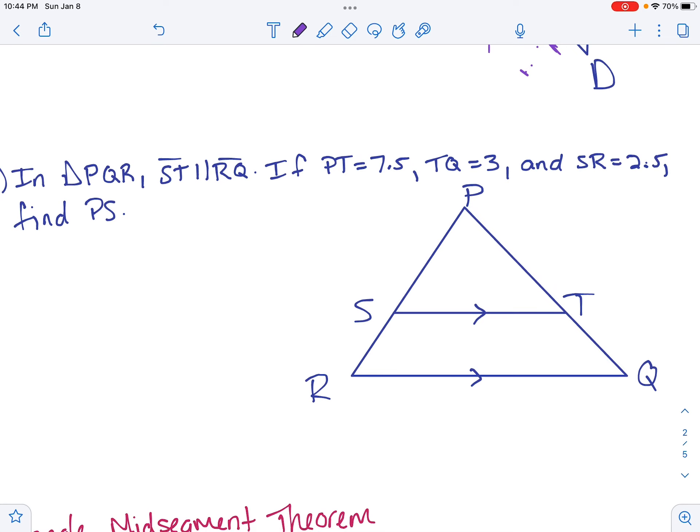In triangle PQR, ST is parallel to RQ, so we have that marked right here. If PT is 7.5, TQ is 3, and SR is 2.5. Well, the first thing we do in geometry is what? Draw the picture and label, label, label. So PT is 7.5, TQ is 3, and SR is 2.5. We need to find PS, so I'm going to call that X. So this line inside the triangle is parallel to the base, which means it cuts each side into equal proportions, so it cuts this side into a proportion, so X over 2.5, and it cuts this side into a proportion, so 7.5 over 3.